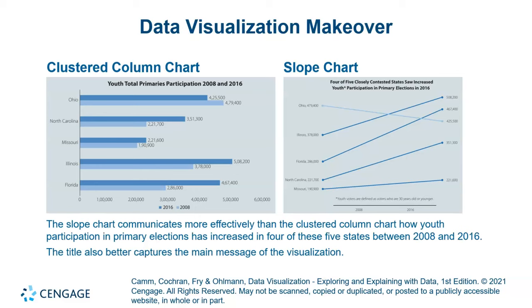Here are two examples. On the left-hand side there is a cluster column chart, and on the right-hand side there is a slope chart. We can easily see that the slope chart has a lower memory load and a higher comfort level. We can easily identify which area — Ohio, Illinois, Florida, North Carolina, or Missouri — shows the most change, by reading the slope easily compared to the cluster column chart.